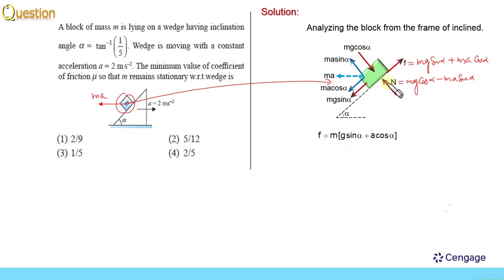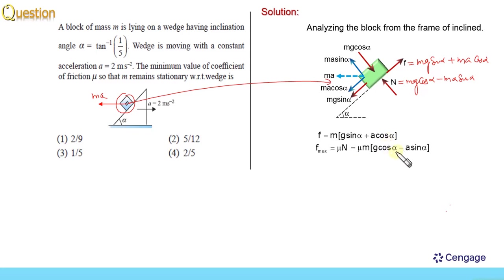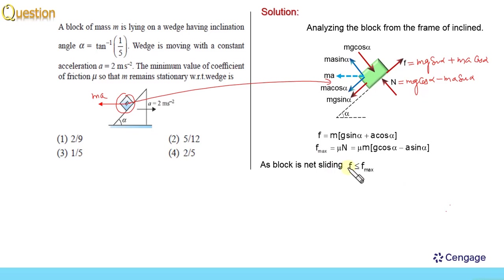Now let us calculate the limiting friction force, that is, the maximum possible value of the friction force. This value is equal to μ multiplied by N, where N equals m·g·cos α minus m·a·sin α. Taking m as common, f_max equals μ·m times (g·cos α minus a·sin α). We know this block is not sliding, which means the real friction force should be less than or equal to the maximum possible friction force. So f ≤ f_max, giving us m(g·sin α + a·cos α) ≤ μ·m(g·cos α − a·sin α).